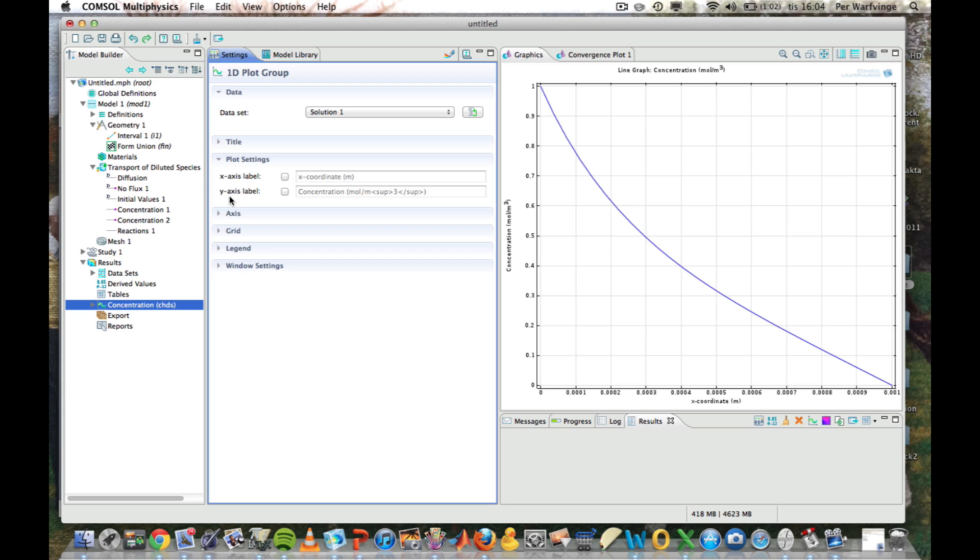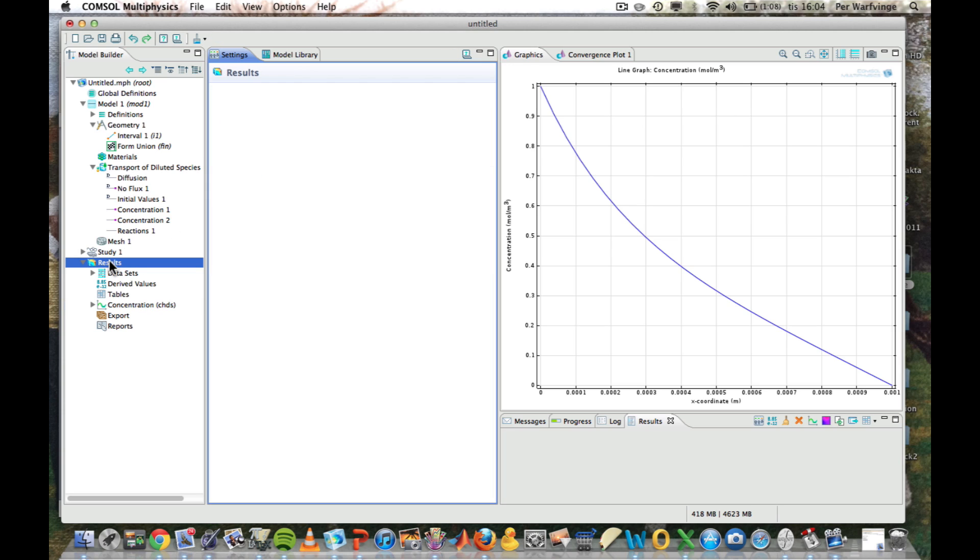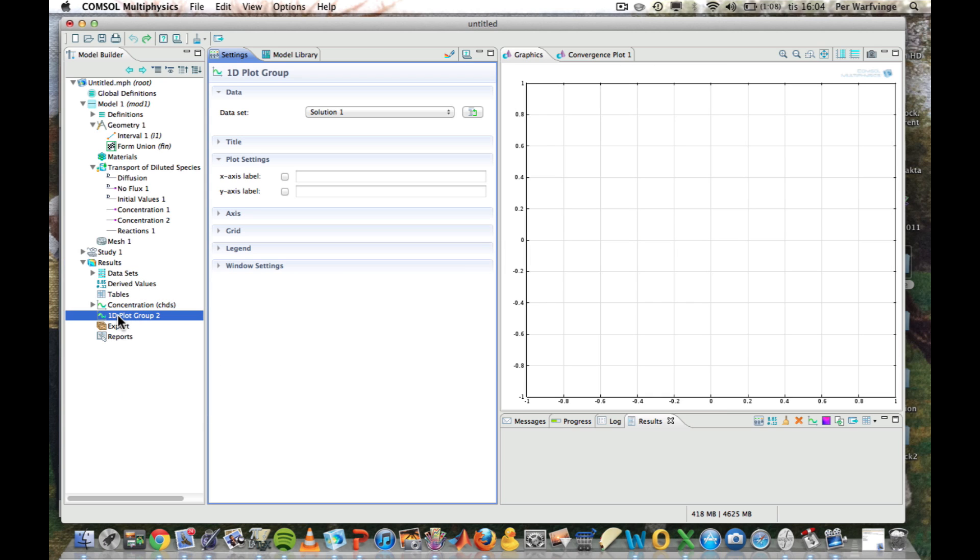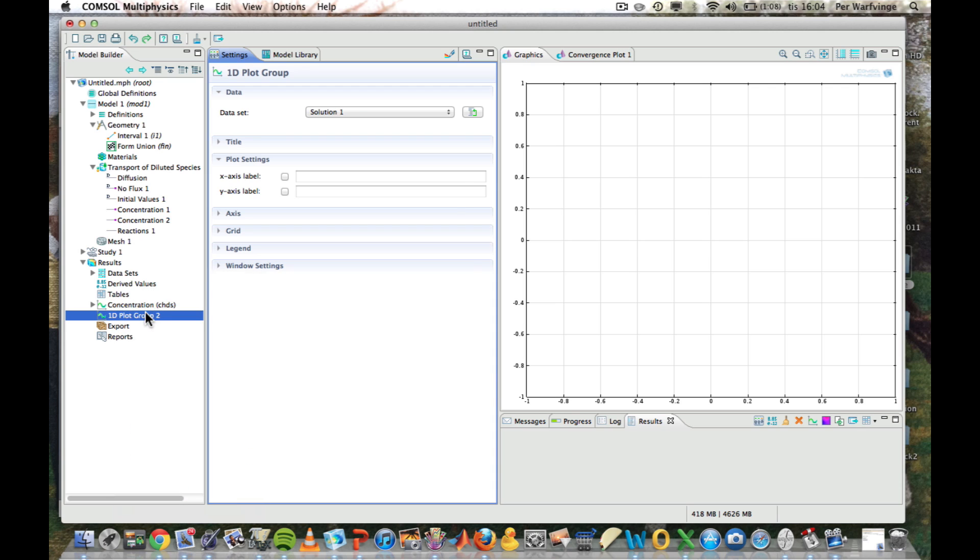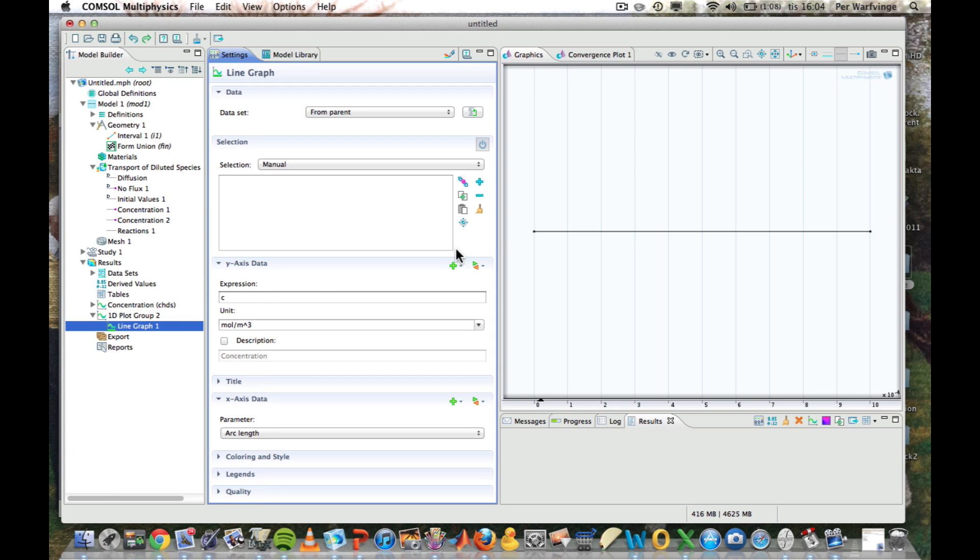Now we can also plot the flux. We go to Result. Right-click. We want to make a 1D plot. Select that. Right-click. We want to make a line graph. And that line graph should cover this whole interval.